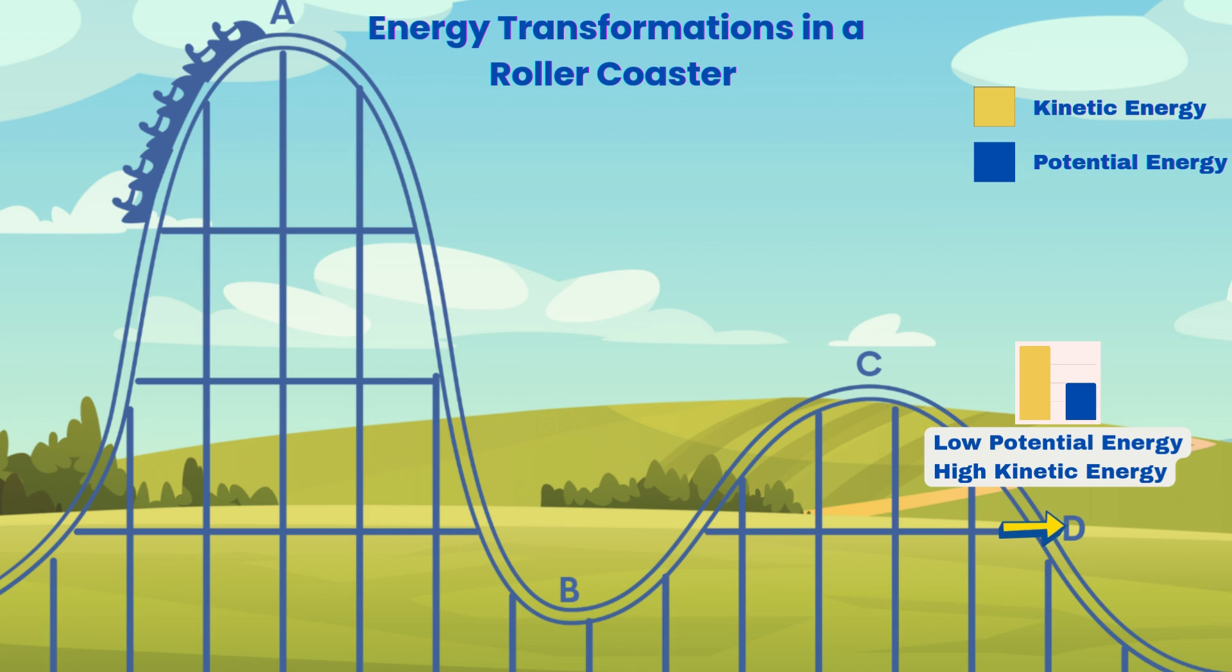At point D, the cart goes down again. The height decreases, so kinetic energy increases while potential energy decreases. The cart speeds up as it goes downhill. Overall, as the cart moves along the track, energy constantly transforms between potential energy due to height and kinetic energy due to speed. But the total energy stays the same.